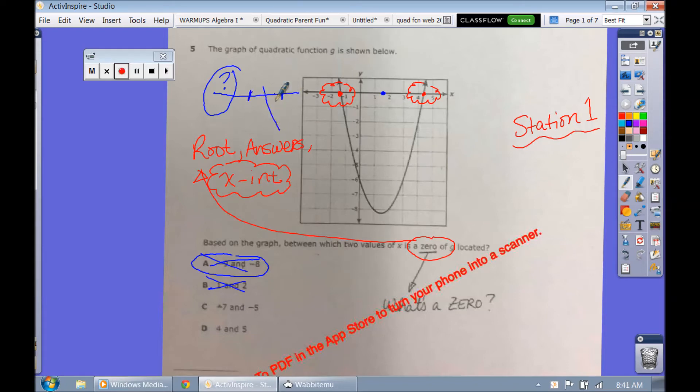And then that just leaves us to the last one here. Do I have a crossing between 4 and 5? Yes. There we go. So our answer is D.